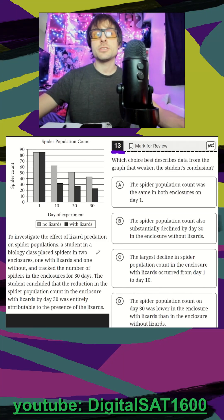To investigate the effect of lizard predation on spider populations, a student placed spiders in two enclosures, one with lizards and one without, and tracked the number of spiders in the enclosures for 30 days. The student concluded that the reduction in the spider population count in the enclosure with lizards by day 30 was entirely attributable to the presence of lizards.